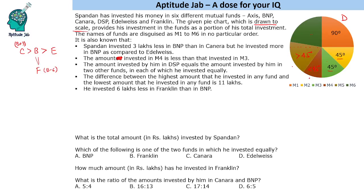Now we have to figure out which can be the two equal ones. Canara is more than at least three other funds, so Canara has to have three values less than it. If we assume a smaller sector is Canara, we only have two values less than it, and we need three distinct values less than it. So the largest sector obviously becomes Canara.